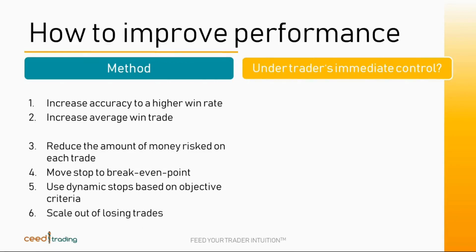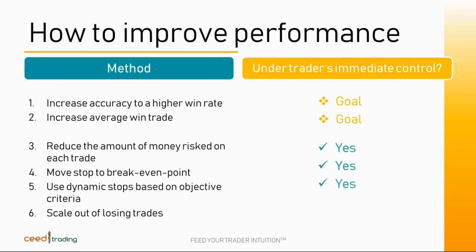Increasing accuracy and average win trades are goals to strive for, but they are not really under our control. On the other hand, we can reduce the amount of risk by setting stops, move stops to break even, use dynamic stops based on objective criteria, and scale out of losing trades.